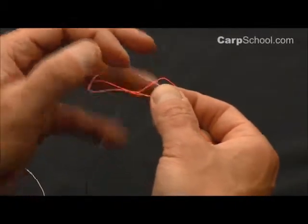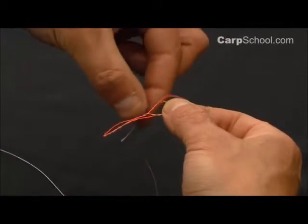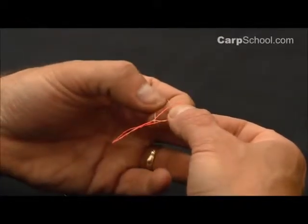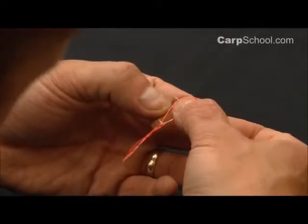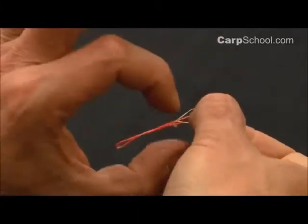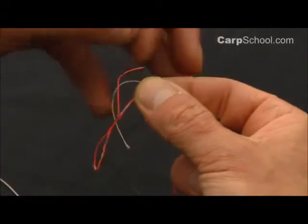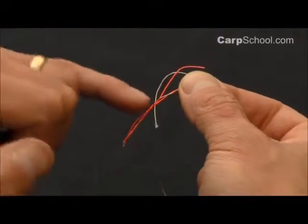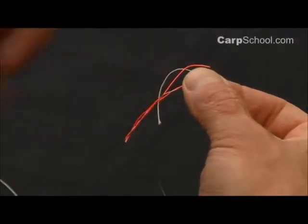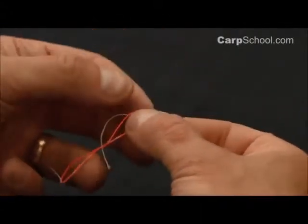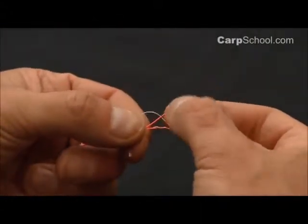And that tag end, we're going to poke back through the same hole that the orange tag end went through, but in the opposite direction this time. That goes through the same loop as the orange tag end came out of, the initial one we created when we started wrapping the white up the orange standing line.